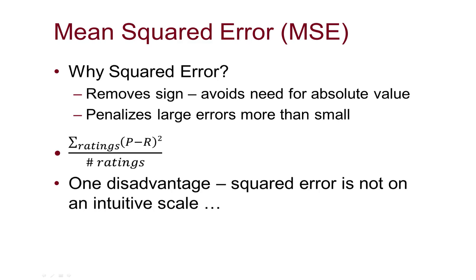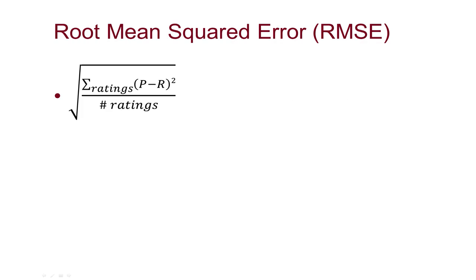If I told you we can predict your star rating and we have a squared error of 1.7, most people don't automatically compute the square root to figure out how many stars off you are on average. That's why people introduced root mean squared error, which takes the same measurement but puts a square root around it. It still penalizes large errors more than small and eliminates sign effects, but by taking the square root we're back on a scale where, if the error is 1.3 stars on a five-star scale, I can meaningfully interpret that.